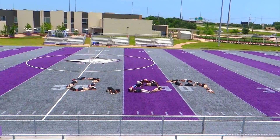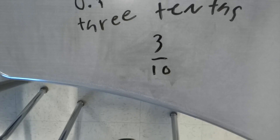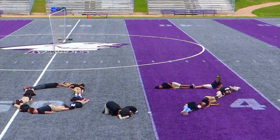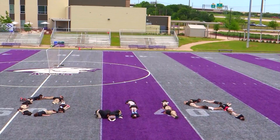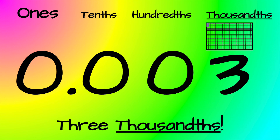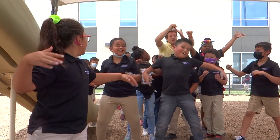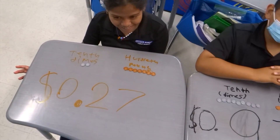Eighty-nine hundredths — that was free. A hundred nineteen thousandths — come with me. There's three tenths, yeah, we see. Now seven tenths decimal, easy. Eighty-nine hundredths, that was free. A hundred nineteen thousandths, come with me.